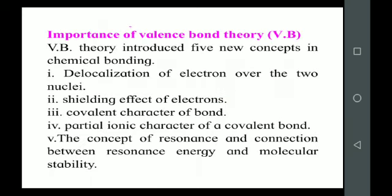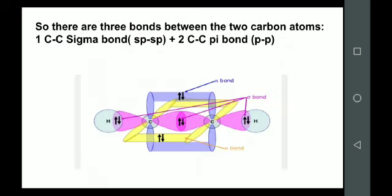In the same way, one more example given in the textbook is beryllium chloride. Go through it and you will find that everything is the same, but in the case of beryllium, there is no pi bonding between beryllium and chlorine. There will be only sigma bonds, and you will get a simple linear geometry.